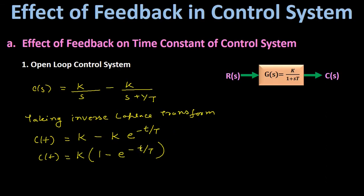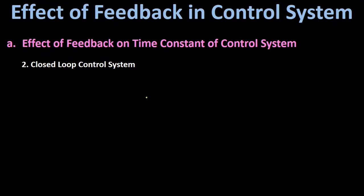This is the output response of the open loop control system. Looking at this equation, the denominator of the small t in the exponent gives the time constant of the system. So for the open loop control system, where the forward path transfer function G(s) = K/(1 + sT), the time constant is equal to T.